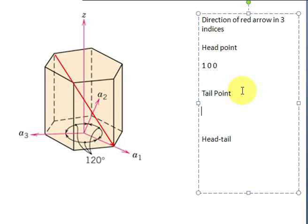Now, the tail point is here, so how do I get there? From the origin, I move minus one unit length in the A1 direction, and one unit cell length in the Z direction. Thus, the tail point will be minus 1, 0 and 1.